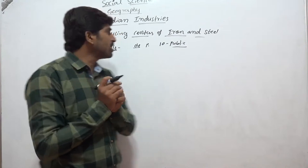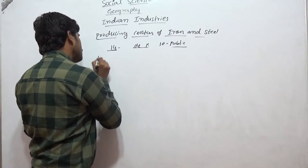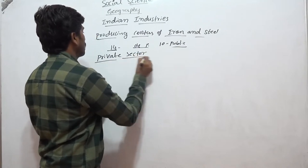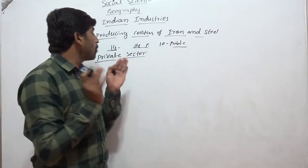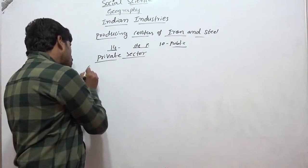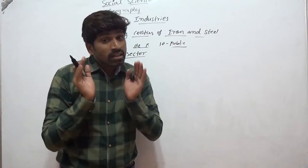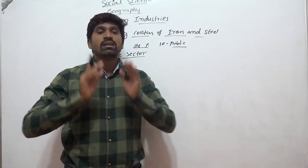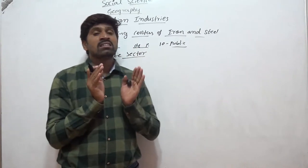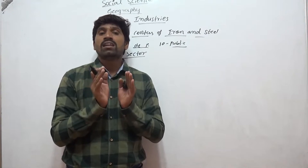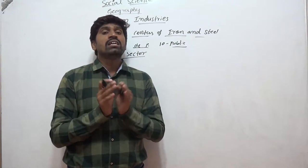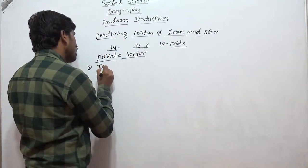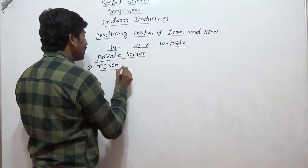The first private sector iron and steel industry is the Tata Iron and Steel Company at Sakchi, Jamshedpur in Jharkhand state. It is popularly known as TISCO — Tata Iron and Steel Company.